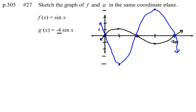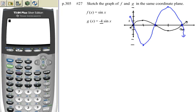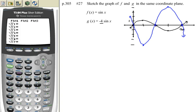Now just to verify this, let's get out our graphing calculator. I'm going to press my y equals key and let's type both of these in here. So I'm going to type in y equals sine of x, and let's type our second function, y equals negative 4 times sine of x.